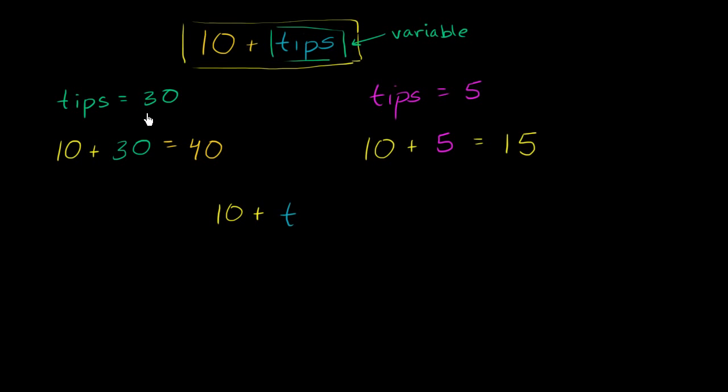And so then we would say, okay, what happens when t is equal to 30? Well, if t is equal to 30, then we'd have, let me write, so what happens when t is equal to 30?